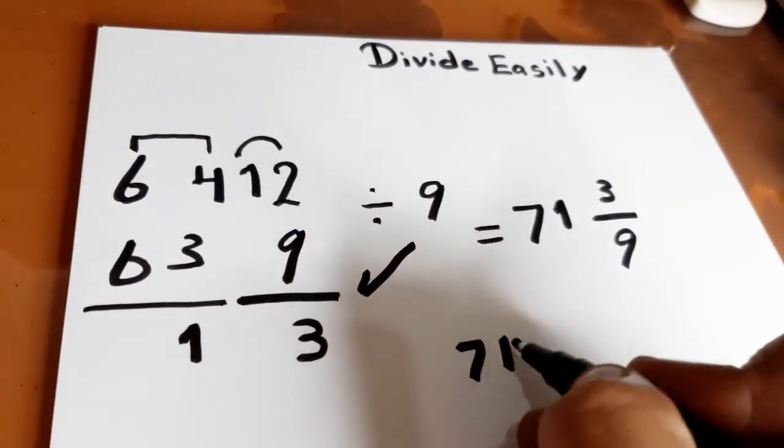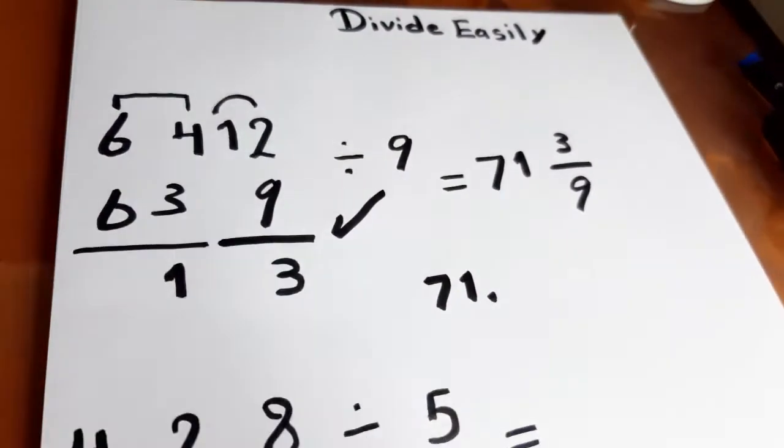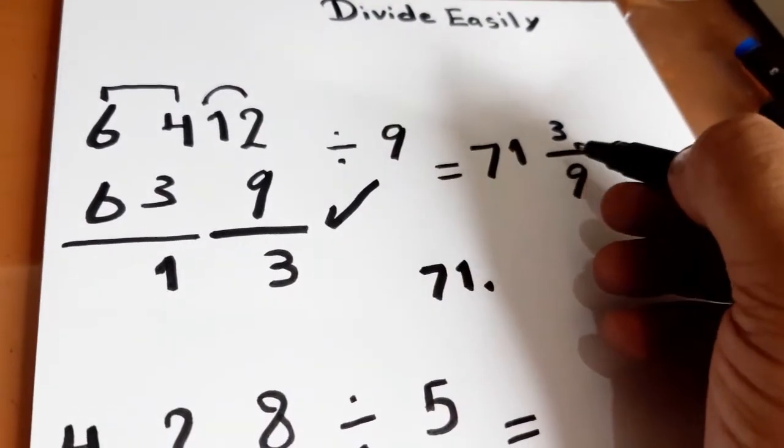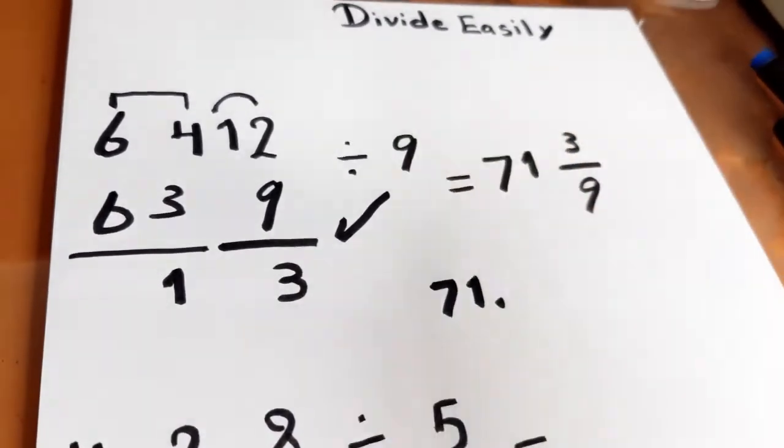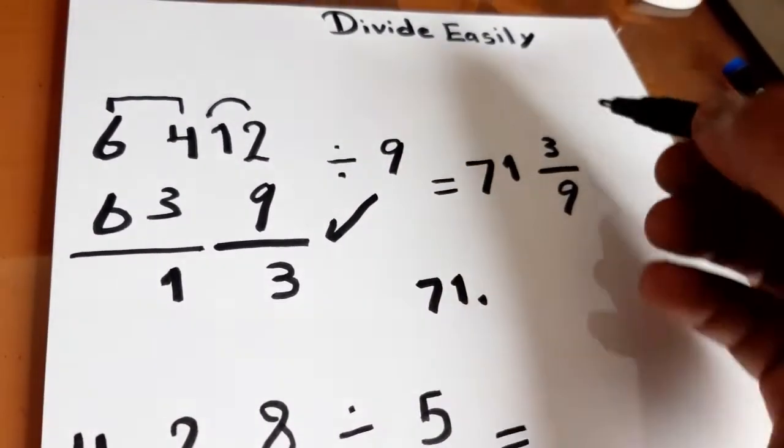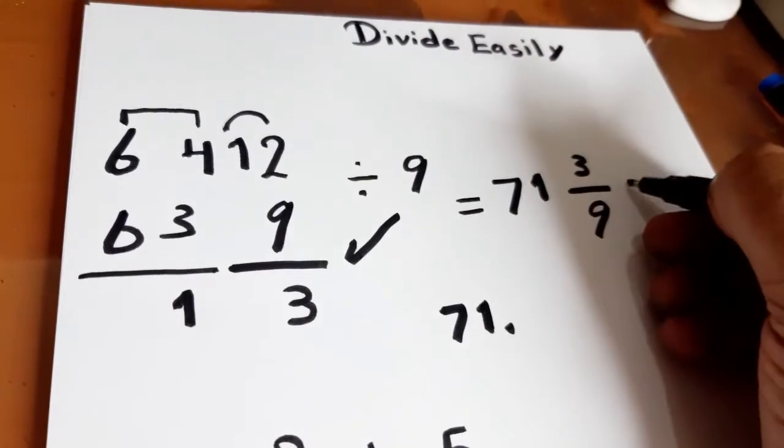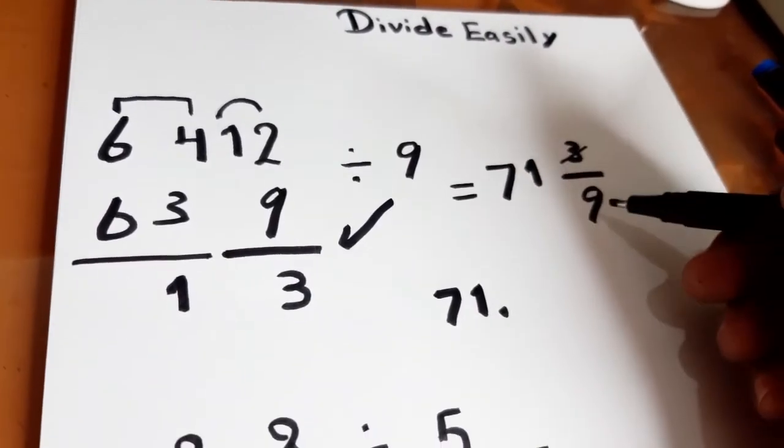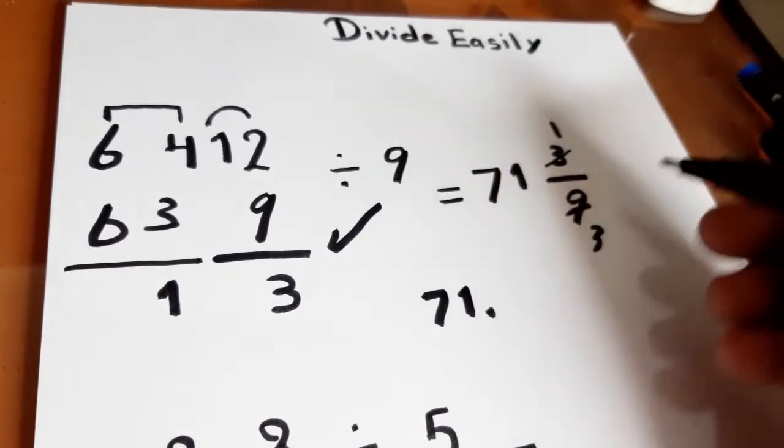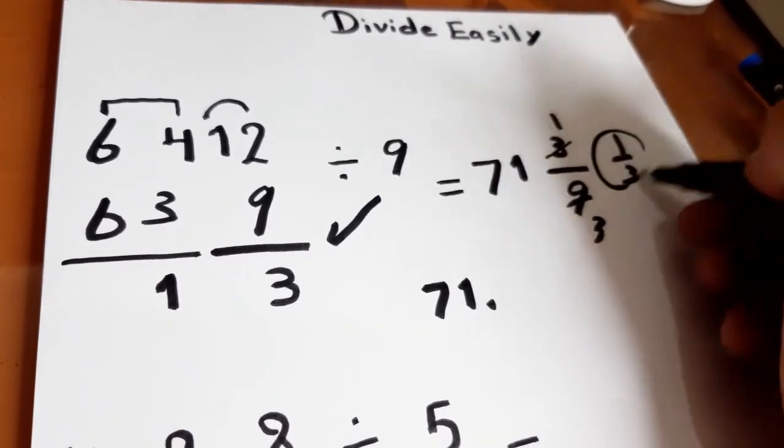We will write 71 as it is and write point. Then 3/9 will be written as it appears on the calculator. We will simplify 3/9 to 1/3. We will have 1/3.